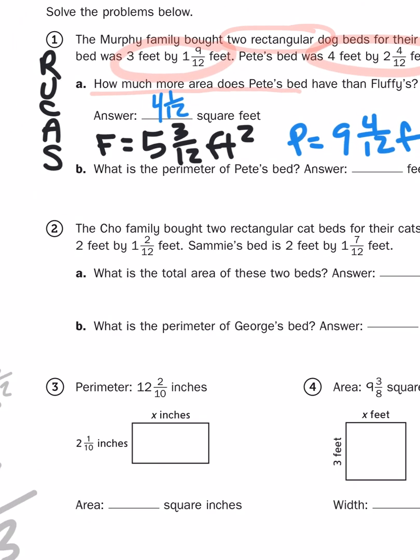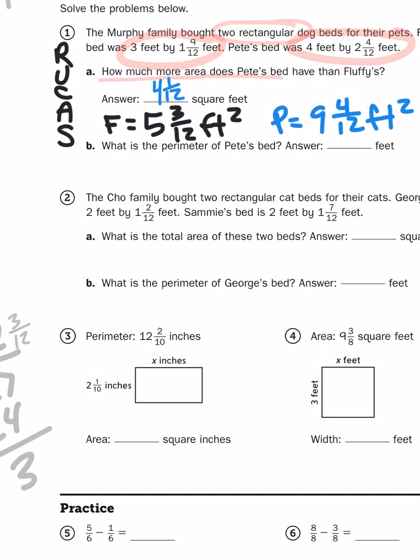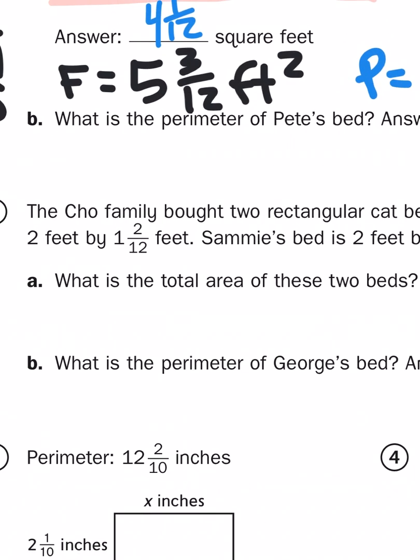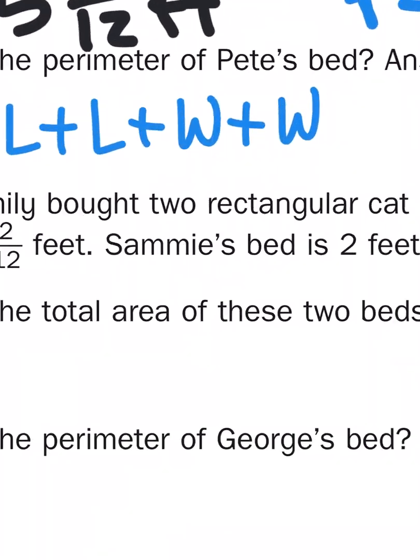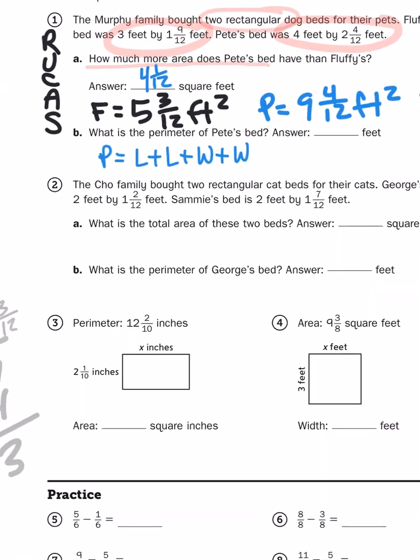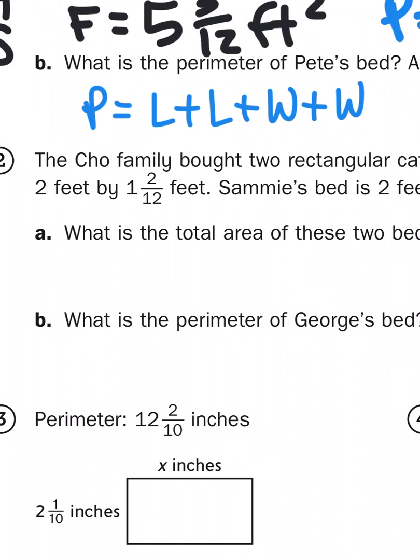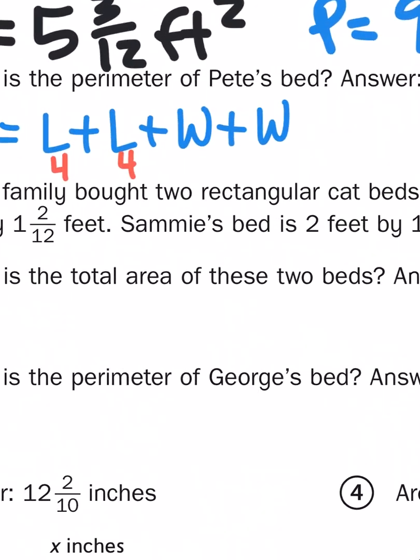So the difference in square feet is 4 and a twelfth. Now, the final part of this problem, they're asking you for the perimeter of Pete's bed. Perimeter is a different formula. Again, we're doing both kinds. Perimeter equals the outside measurement of the line segments that make up the rectangle. Length plus length plus width plus width.